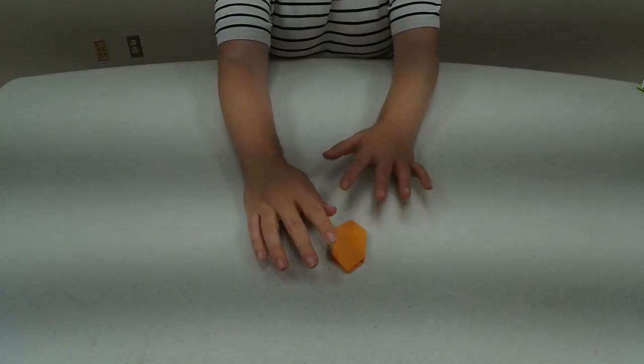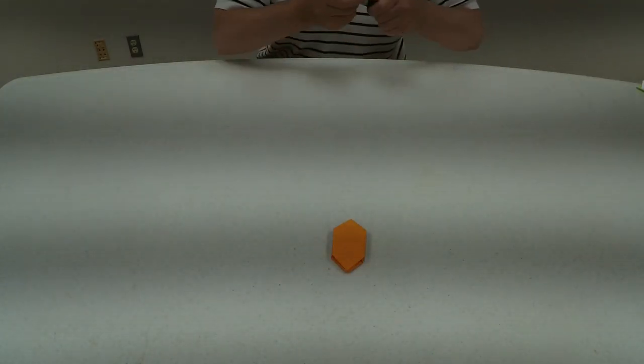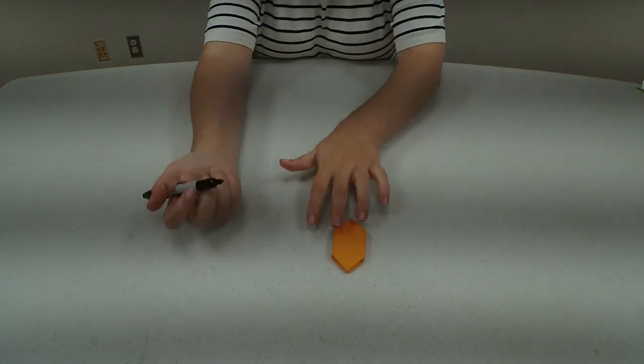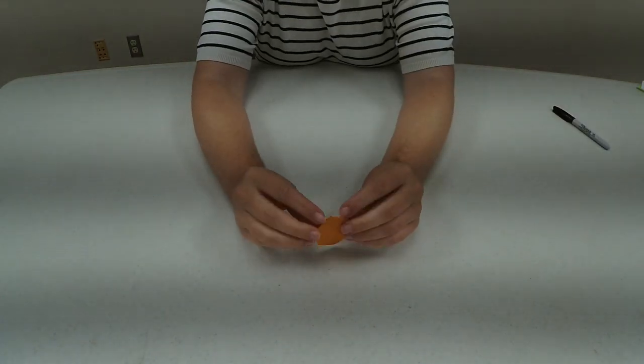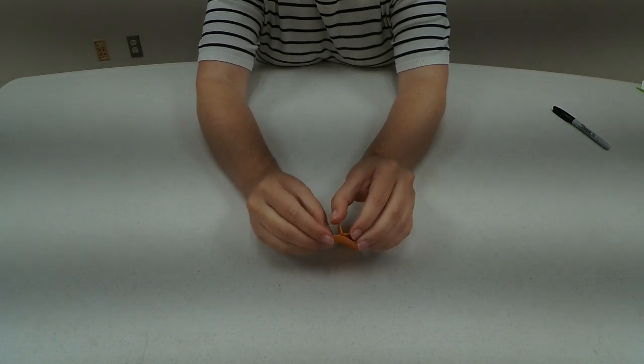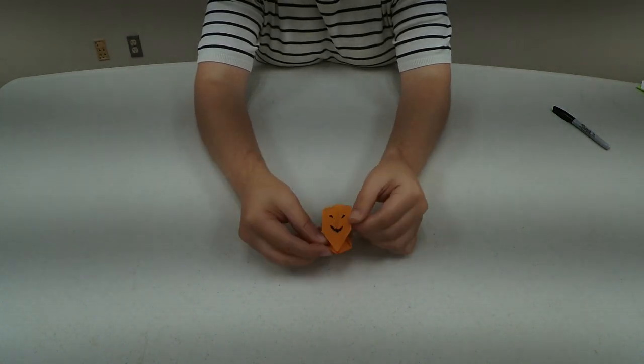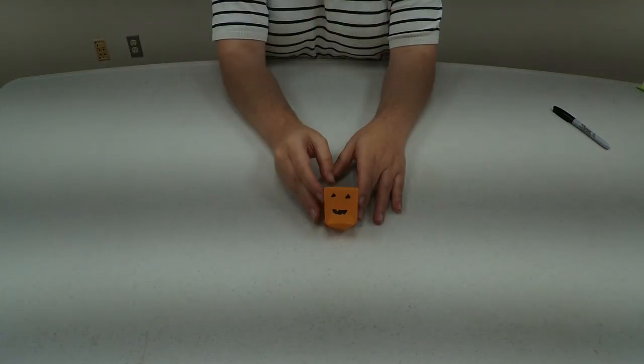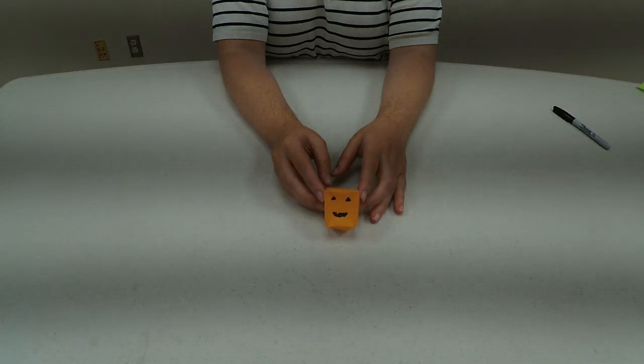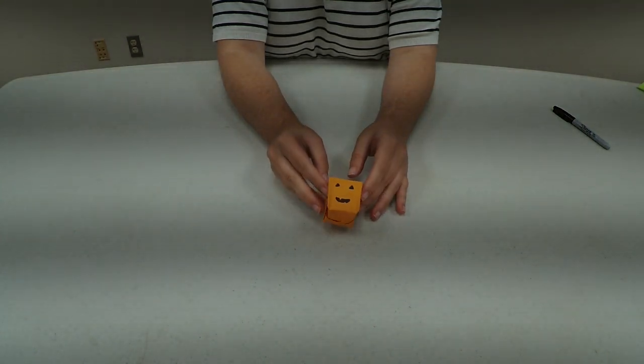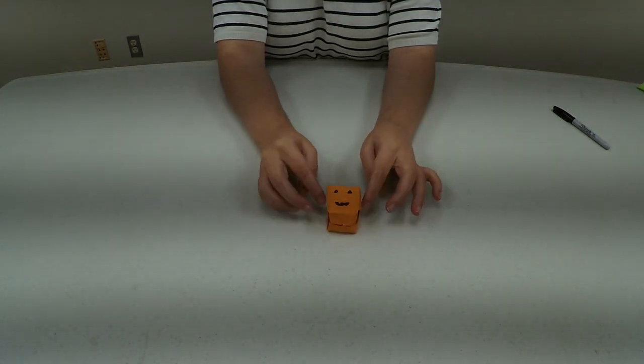So now we're going to draw our jack-o'-lantern face. You can do one on each side if you'd like. And then the hole that you have down here in the bottom, you are actually going to blow air into. And once you've blown air to it and got it into shape, you have your jack-o'-lantern.